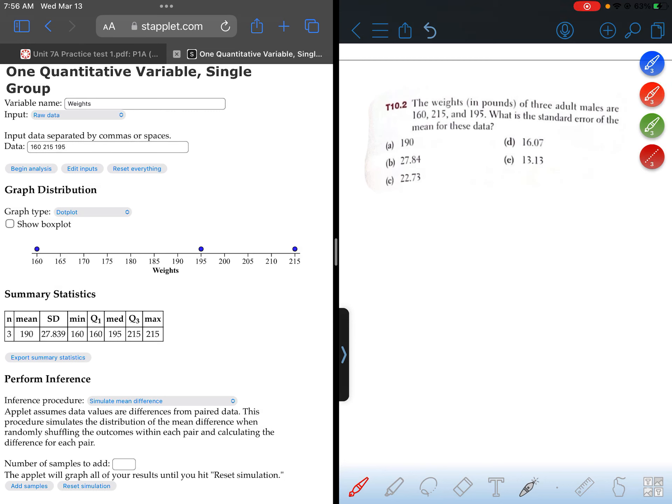Question T10.2. The weights in pounds of three adult males are 160, 215, and 195. What is the standard error of the mean for these data?